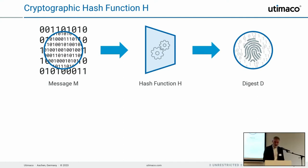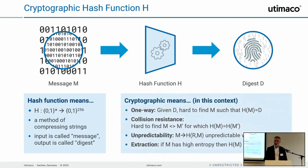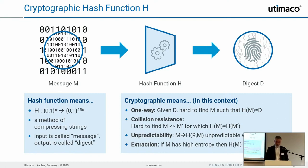A cryptographic hash function takes a very large message as input and produces a digest with a fixed length — typically 256 bits, though it can be larger. The term 'cryptographic' means these functions have several important properties. One is the one-way function property: you can go in one direction but cannot reverse the process. Another very important property is collision resistance — it's hard to find two different inputs that hash to the same digest. These are the most important properties.